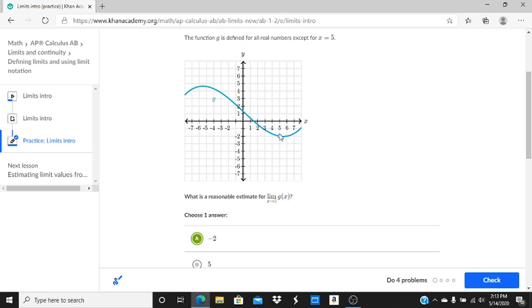It doesn't have to have a value at the actual number. We're not evaluating the value at the actual point. We're just seeing what is the function approaching. So in this case, it's going to be negative 2.